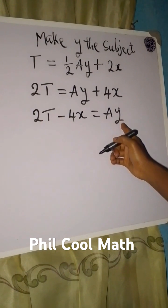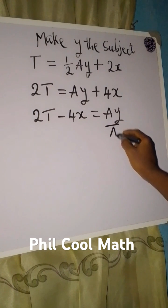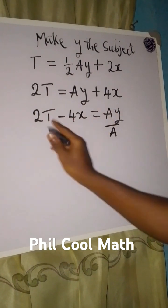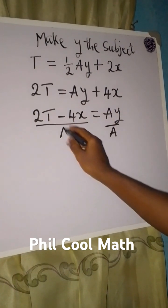So that's from here. Since we are making y the subject, that means I have to divide both sides by A so that y will be free. And the whole of this will be divided by A.